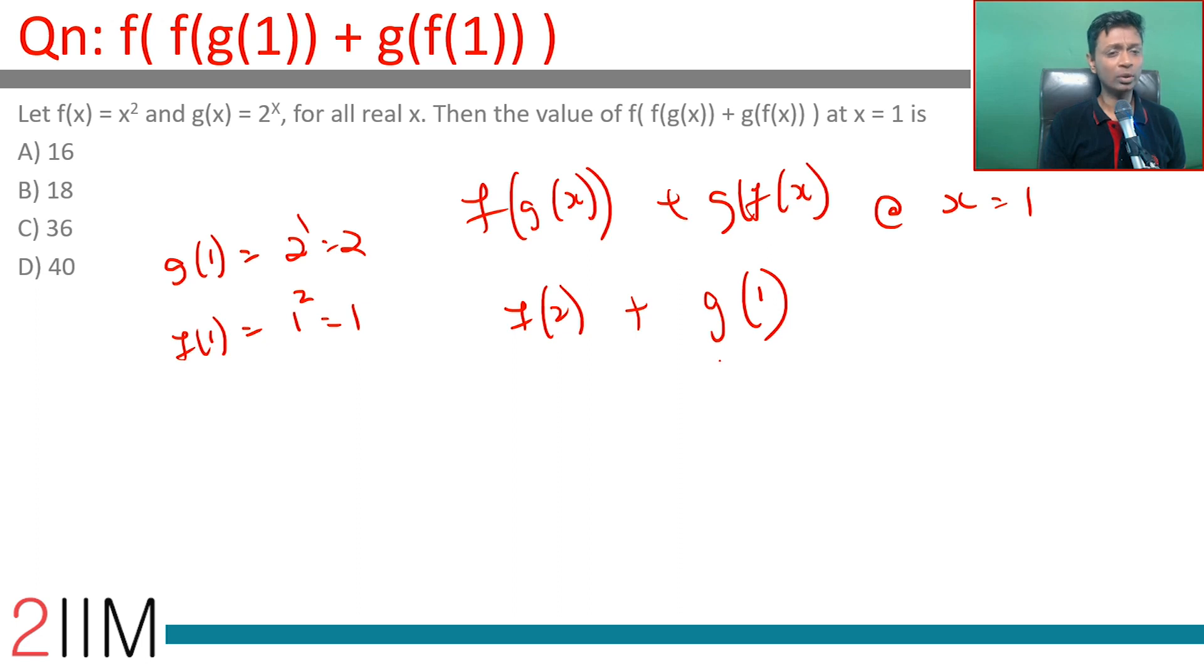Now f(2) is 2² which is 4, and g(1) is 2^1 which is 2.